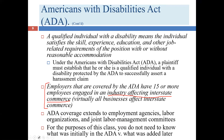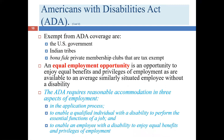Some entities are exempt from the ADA: the US government (covered instead by the Rehabilitation Act), Indian tribes (which are autonomous nations), and bona fide private membership clubs. Other than the federal government, these are relatively small populations.